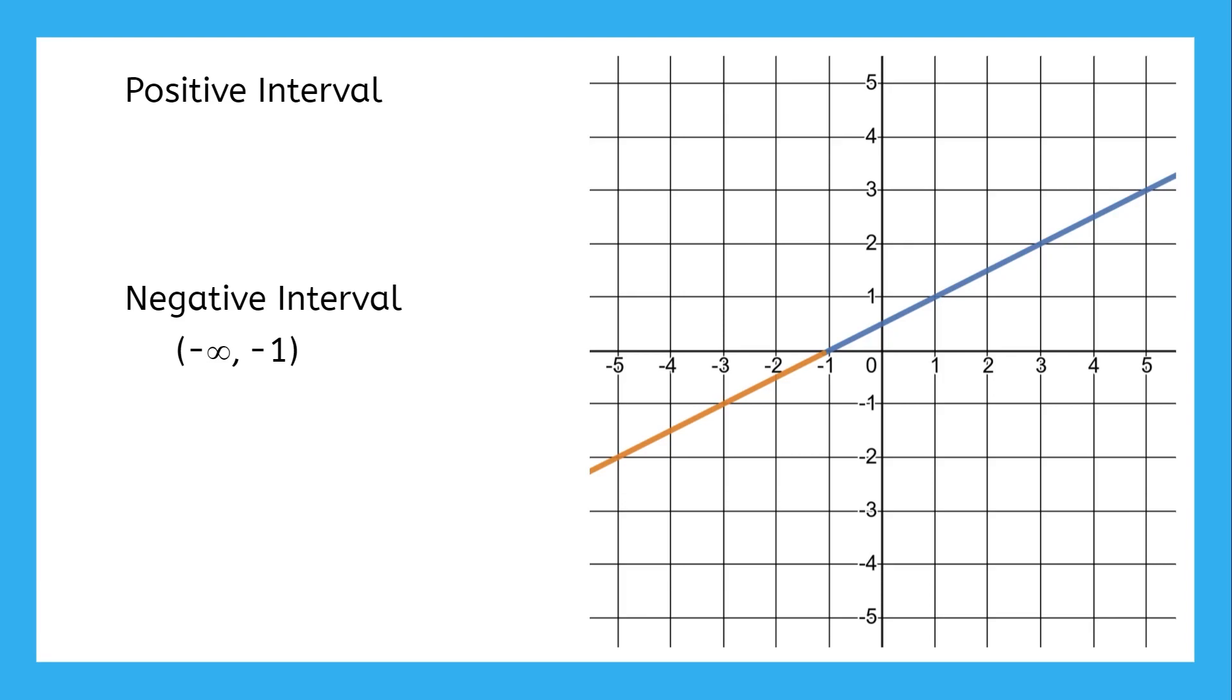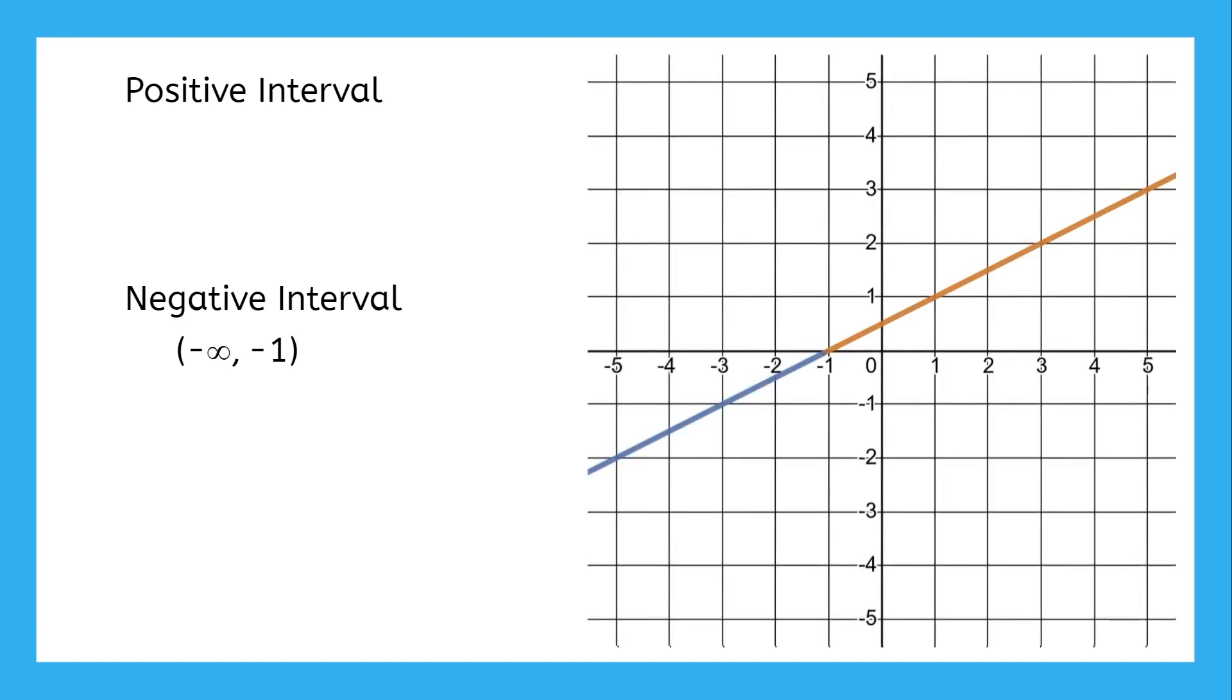After negative one, the function goes above the horizontal axis, so this would be a positive interval. The interval starts at negative one and ends way off the right side of the graph, so we say it goes from negative one to infinity, not including negative one since that output is zero, not a positive number.